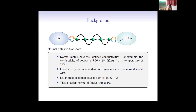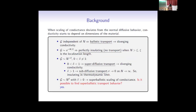If the conductance current scales as 1/N, this is called normal diffusive transport, and in that case the conductivity is independent of the dimension of the system — it has a well-defined conductivity. For low-dimensional systems, we often see departures from this scaling. When conductance is independent of system size, this is ballistic transport, and conductivity diverges. Conductance can also follow exponential decay — this is perfectly insulating, or no-transport, behavior.